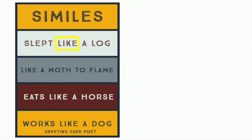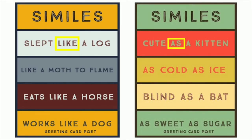Like in our examples: he slept like a log, like a moth to flame, he eats like a horse, or I work like a dog — we use 'like.' Other similes: she's as cute as a kitten, Canada is cold as ice, I'm becoming blind as a bat, she is as sweet as sugar. You can see 'as' on the right-hand side and 'like' is used on the left-hand side.